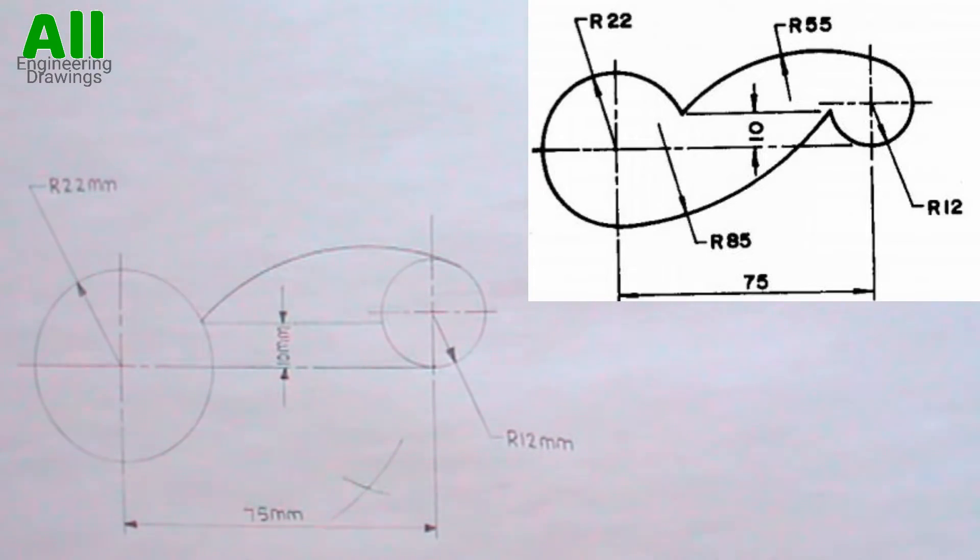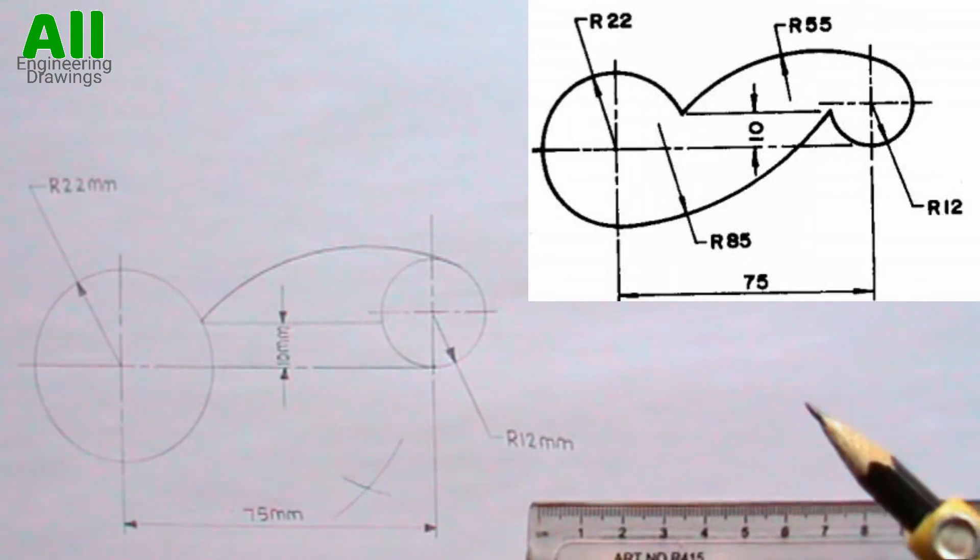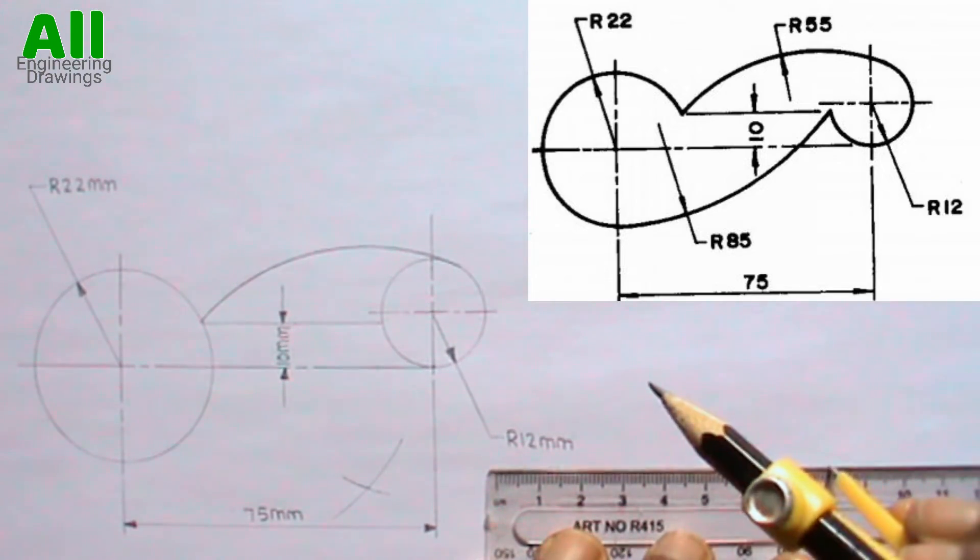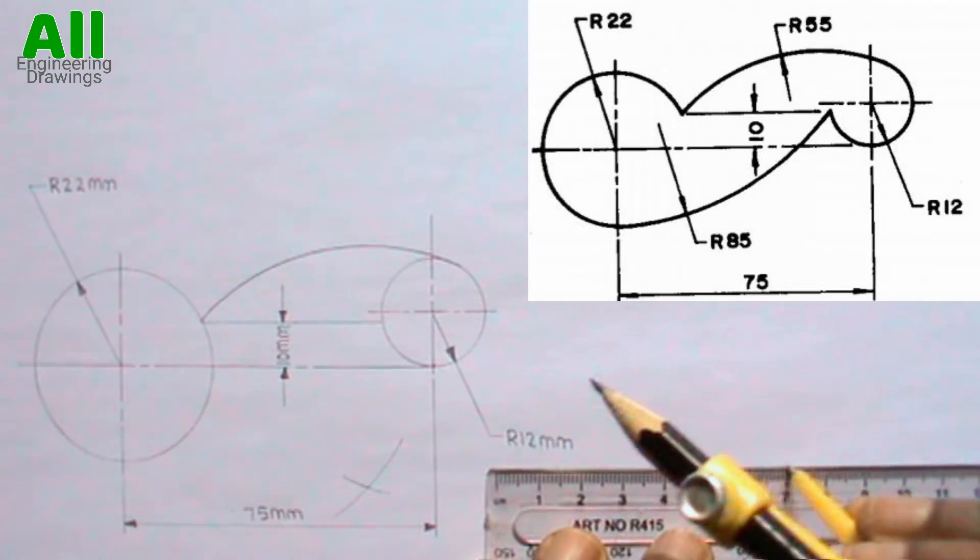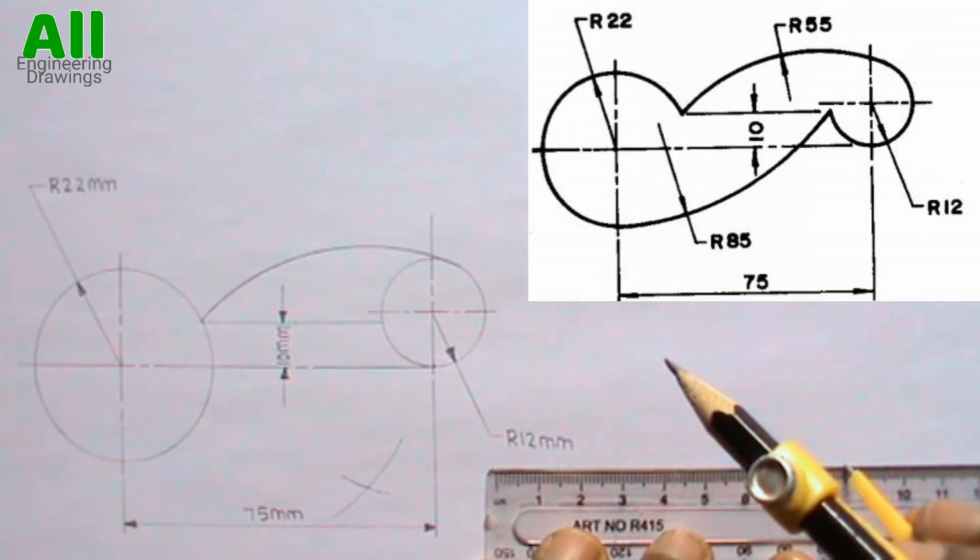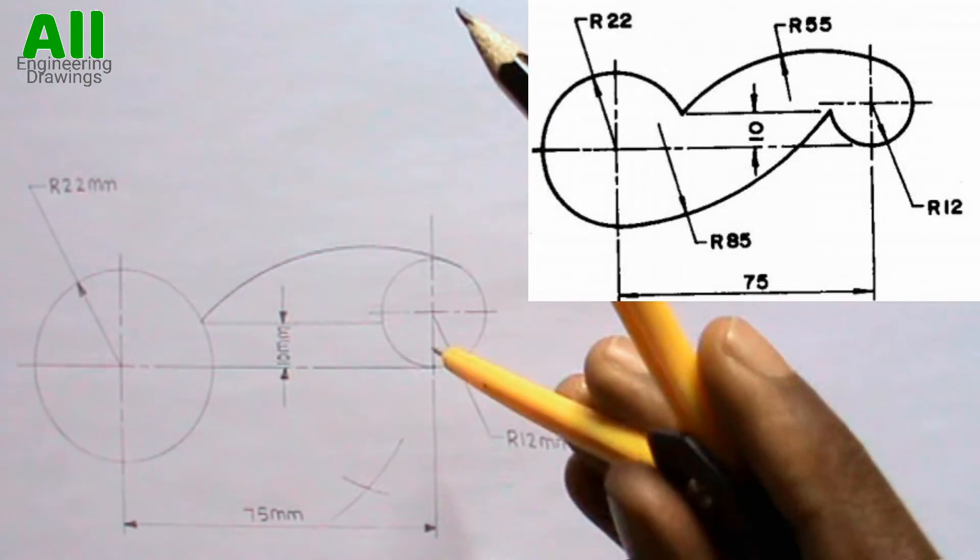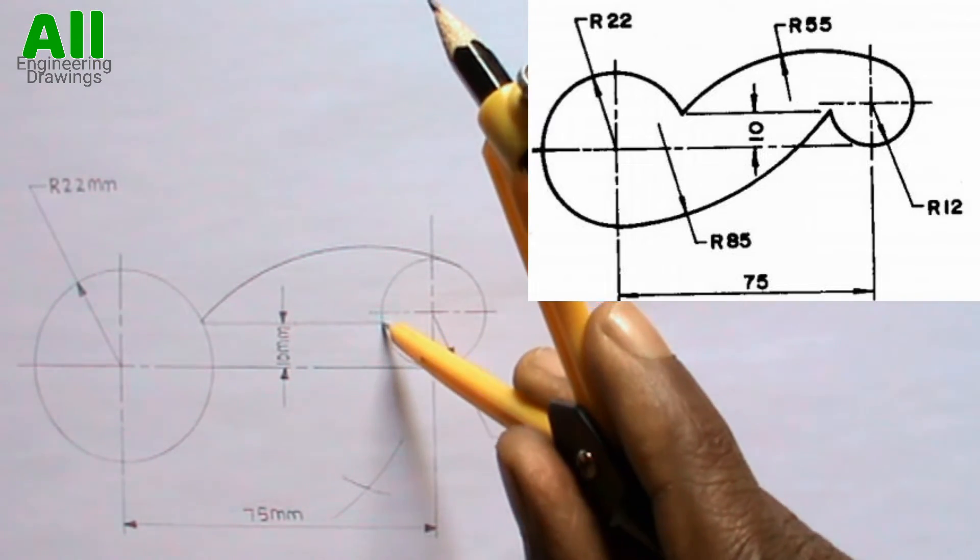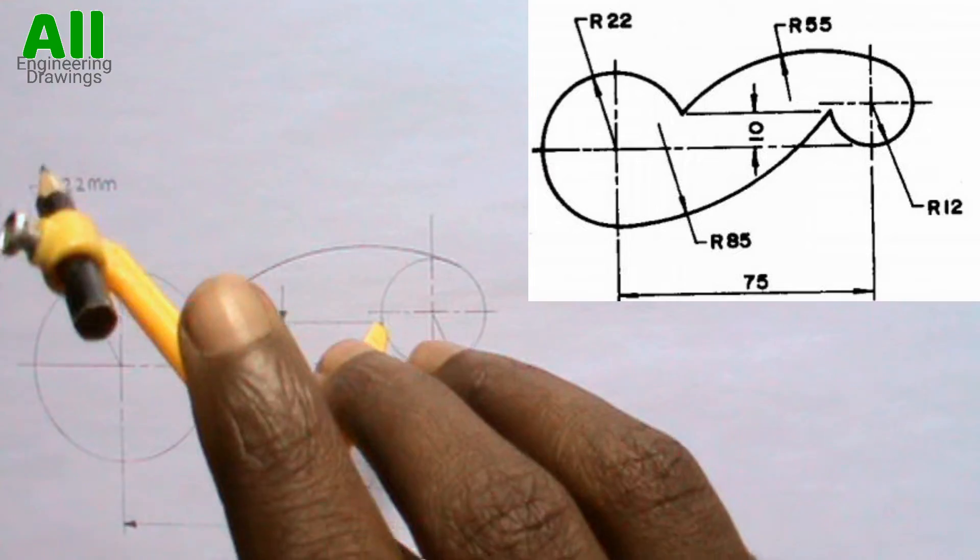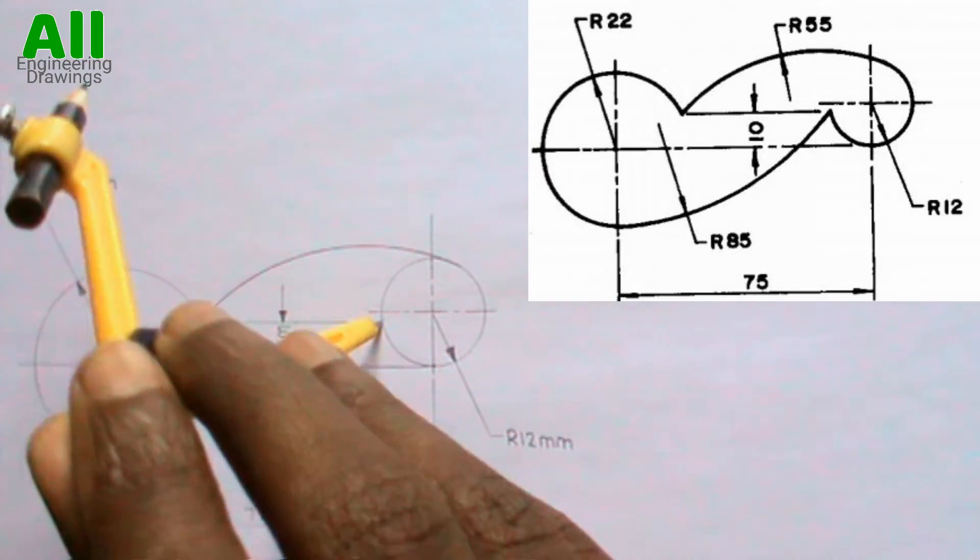To produce the lower tangential arc, first extend your compass to a radius of 85mm. Then place your compass on this point. Then cut an arc.